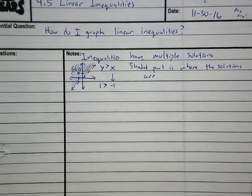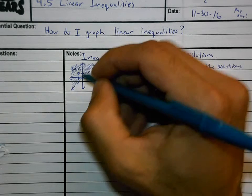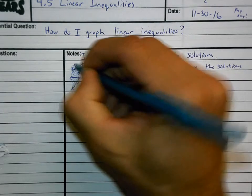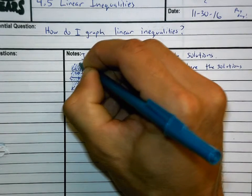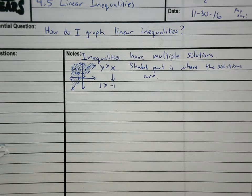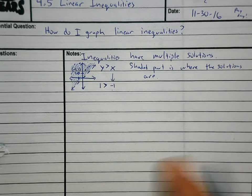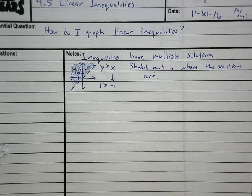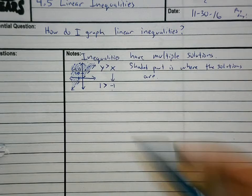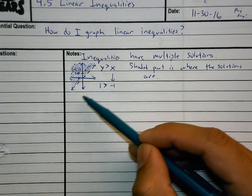You can have a variety of solutions — you have an infinite number of solutions, because it could be this point, or this point, or this point. All this shaded part is made up of so many points that you cannot count them all. That's why I say there are an infinite number of solutions, because there's so many you can't count them.